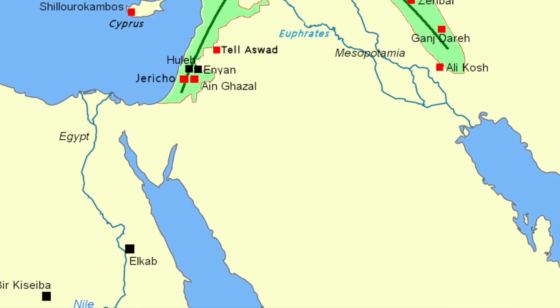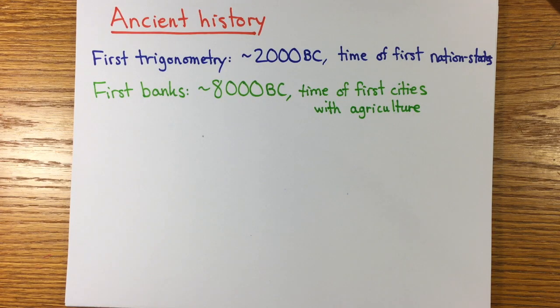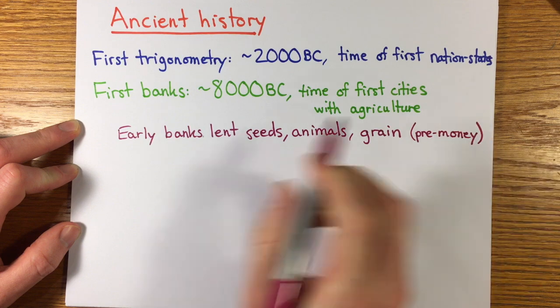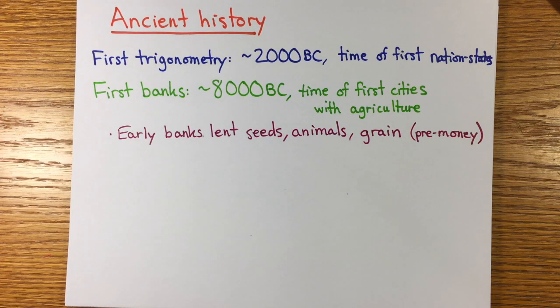These were cities like Jericho, Tel Caramel, and Catalhoyuk. Here's a map of cities from this period. Banking predates money to times when banks lent and stored seeds, animals, and grain.